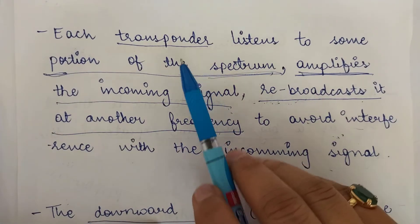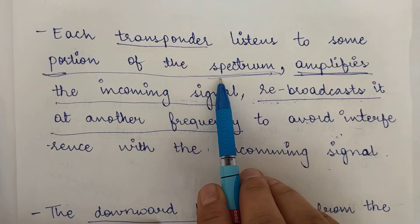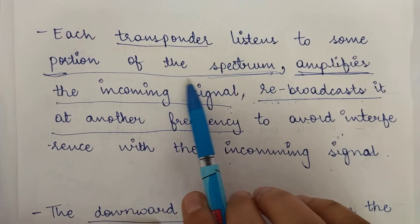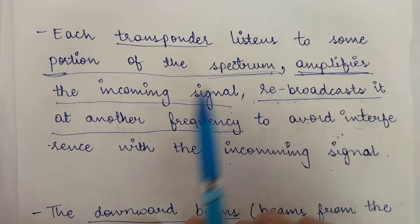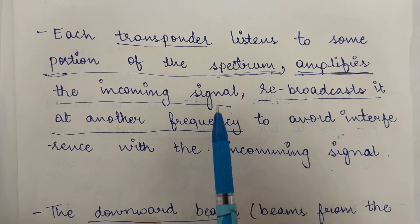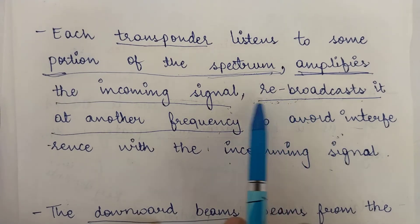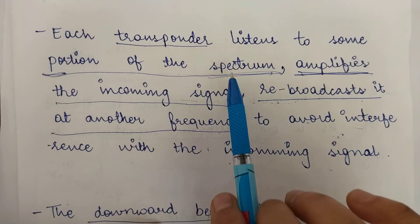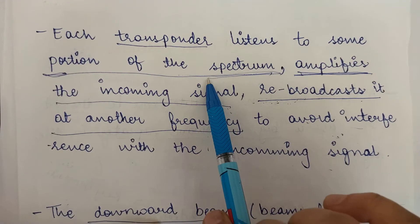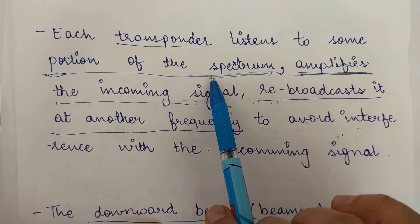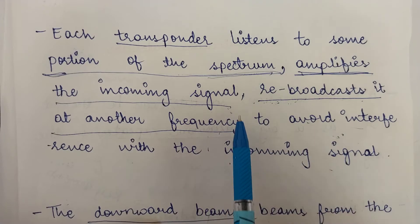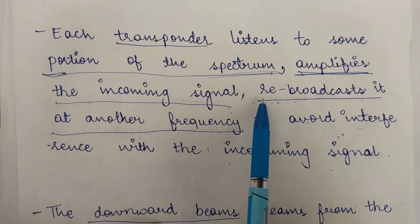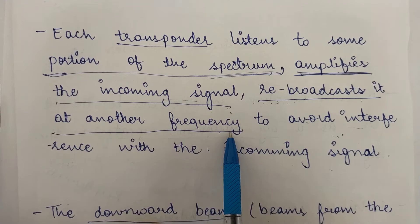Each transponder is listening to some portion of the spectrum at any given point of time. It then amplifies the incoming signal, and after amplifying those signals, it rebroadcasts them at another frequency. Why at another frequency? Because signals may also be coming through that same spectrum, so to avoid interference with the incoming signals, it rebroadcasts at a different frequency.